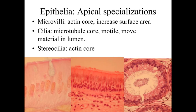Looking at the apical surface, we can see specializations. In this slide we've got some microvilli across the surface — they increase surface area and have actin cores. In the middle slide, we've got cilia at slightly lower magnification — finger-like projections coming off the apical end, but instead of a solid actin rod like microvilli, they have a microtubule core. Cilia are capable of movement and can beat to propel things along the surface. Over here we've got stereocilia, which are essentially long microvilli with an actin core — not motile, not a true cilium, but referred to as stereocilia.